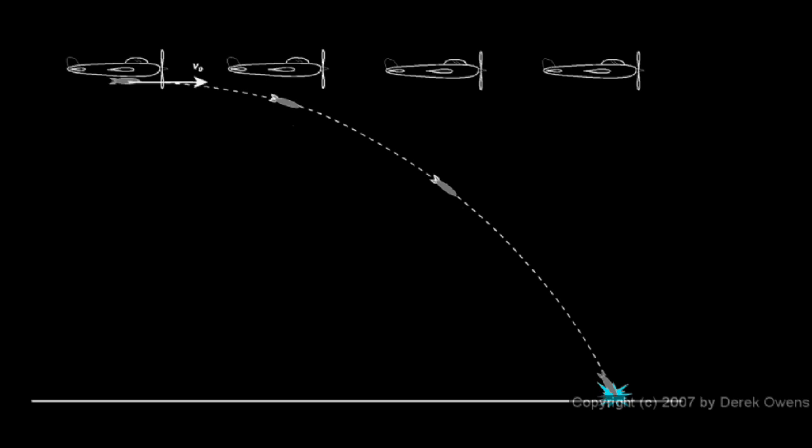The bomb though accelerates down, so the vertical distance that it has fallen after each increment of time gets larger and larger. It gains more and more downward speed.